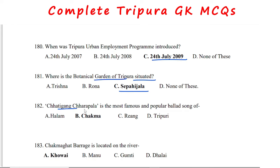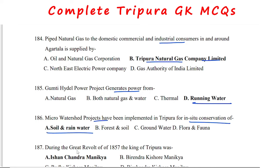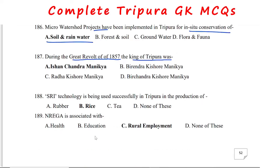Chatiganga Charapala is the most famous ballad song of the Chakma community. Chakma Ghat Berries is located on the river Hawai. Piped natural gas to domestic, commercial, and industrial consumers in and around Agartala is supplied by TNGC — Tripura Natural Gas Company Limited. Gumuti Hydel Power Project generates power from running water. Micro watershed projects have been implemented in Tripura for in-situ conservation of soil and rainwater. During the great revolt of 1857, the king of Tripura was Ishan Chandra Manika.